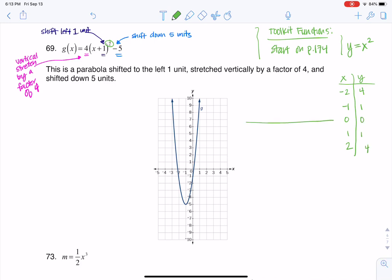So I had five ordered pairs. Zero, zero, one, one, negative one, one. And then we had two, four, and negative two, four.